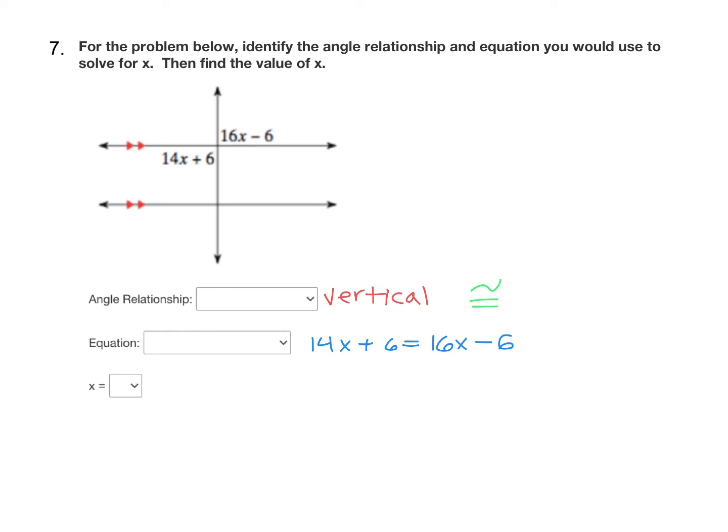Now to solve it here, since we have a variable on both sides, let's start by getting rid of the 14x to collect all the x's on one side. That's going to leave us with six equals two x minus six. Then we can add six on both sides to get the two x alone.